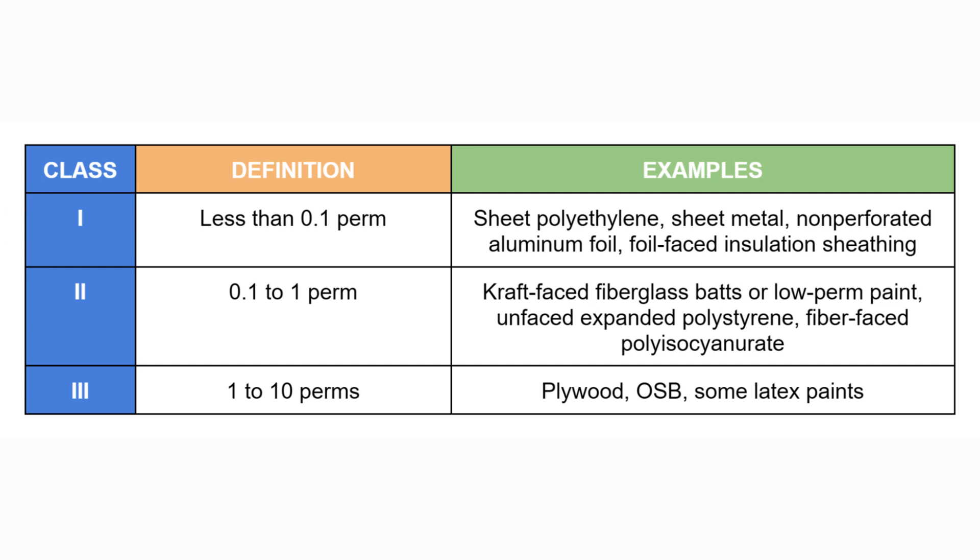Materials that have a perm rating between 0.1 perms and 1 perm are class 2 vapor retarders, and are semi-vapor impermeable. A little bit of moisture can dry through the material, but for the most part the intention is to slow down vapor transmission. You also need to use these materials very carefully.